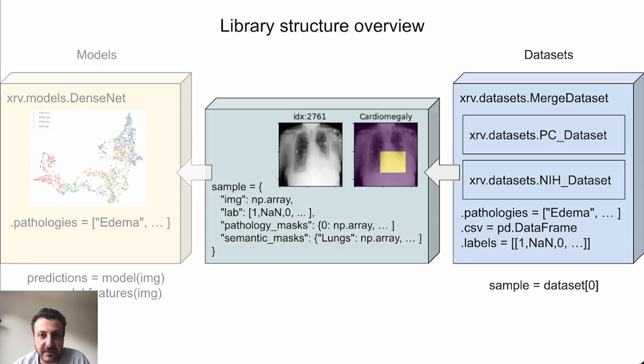A sample that is taken from the data set contains the image and labels. If pathology or semantic masks are available, they are provided as dictionary keys. Semantic masks are things like lungs that don't correspond to any pathology.